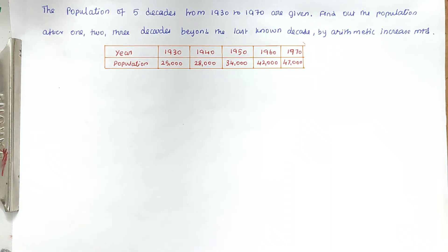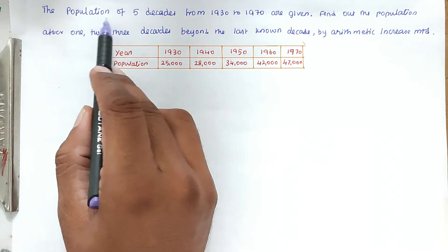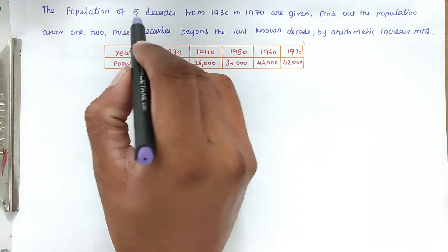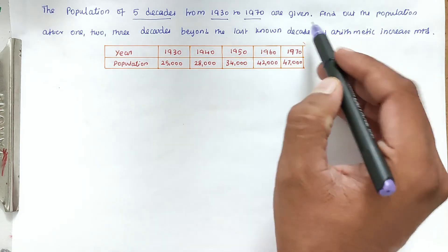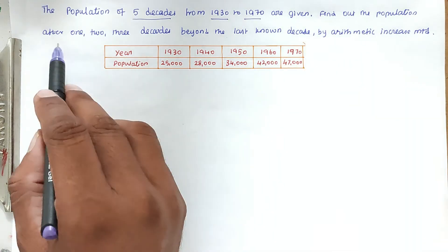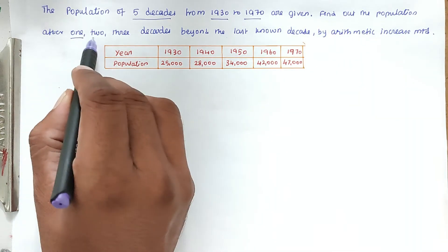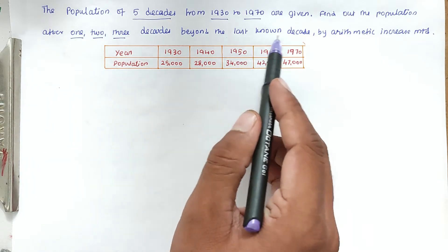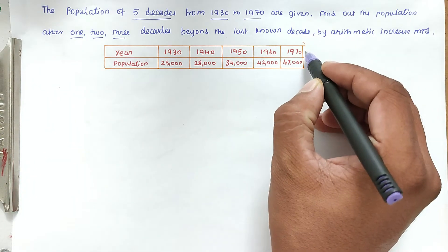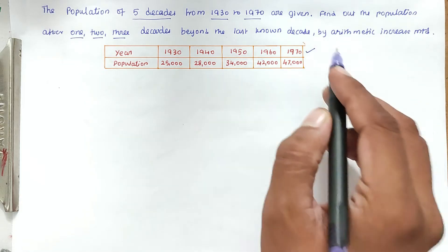Hello friends, welcome to Steel Engineering Exam. Today we are going to see a problem related to water resource engineering, in the topic of water demands — that is, population forecasting. The problem is: the population for five decades from 1930 to 1970 are given. Find out the population after one decade, two decades, and three decades beyond the last known decade, that is 1970.